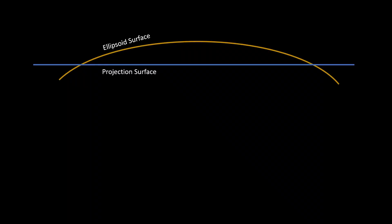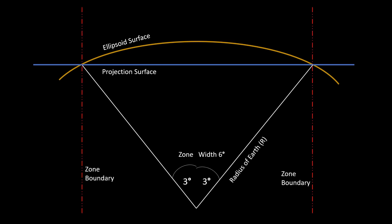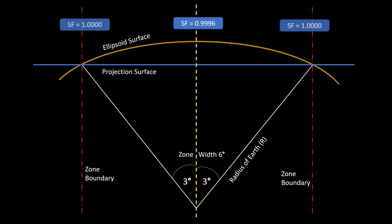Now this is too much simplification — there are many other factors, but today we are trying to understand the scale factor only. Every zone has a central meridian and the scale factor at the central meridian is 0.9996, at the equator. The scale factor at the boundary of the zone will be exactly 1. If you cross the zone and don't change the zone number, your scale factor will be greater than 1 and will keep increasing as you go further from the zone boundary.